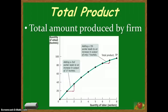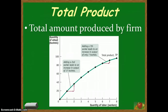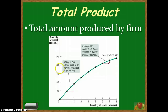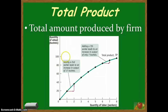For the total product function, the fixed input — land — has no real bearing on my production quantity right now; it's just an assumption. So what we're looking at in the total product function is the variable input, in this case labor, or the number of workers I have. I can begin to chart: if I have one worker, I could produce 20 bushels of wheat; if I had two workers, I could produce 40 bushels, and so on, creating the total product curve, which tends to go up as I add more inputs.